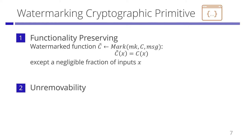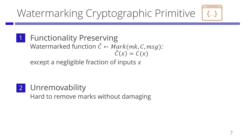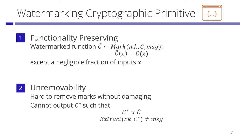More formally, there are two main requirements on watermarking. The first one is functionality preserving: C-tilde is a watermarked function with message m, and for except a negligible fraction of inputs, the output of C-tilde is the same as that of C. The other one is unremovability: we cannot remove a mark without destroying the functionality. That is, if the embedded message is changed, the function does not preserve the original functionality.